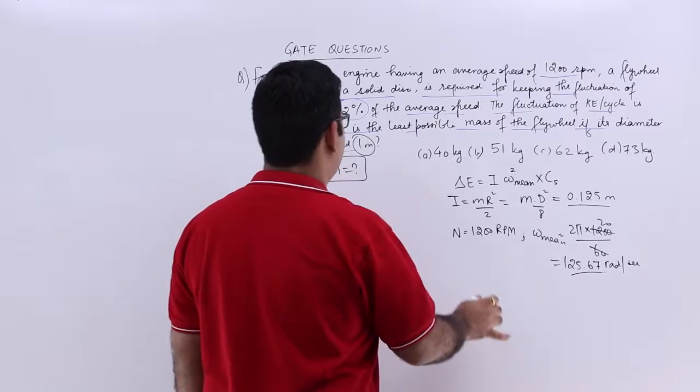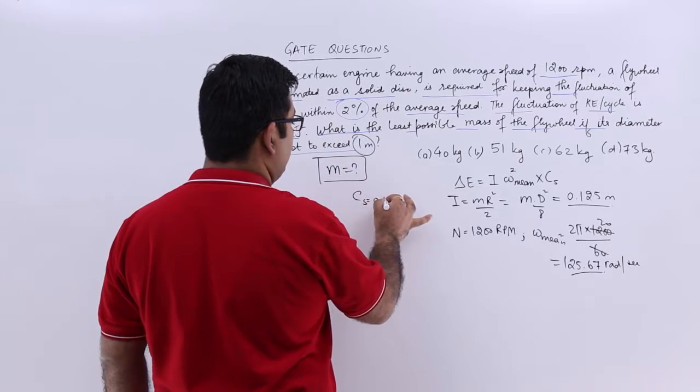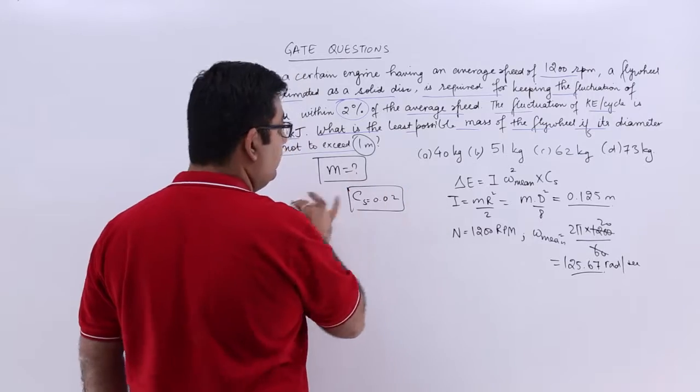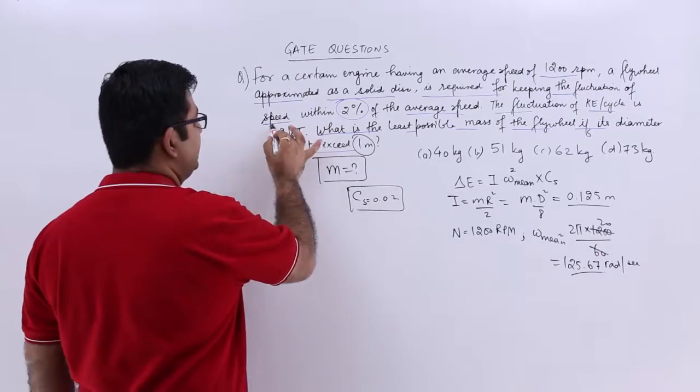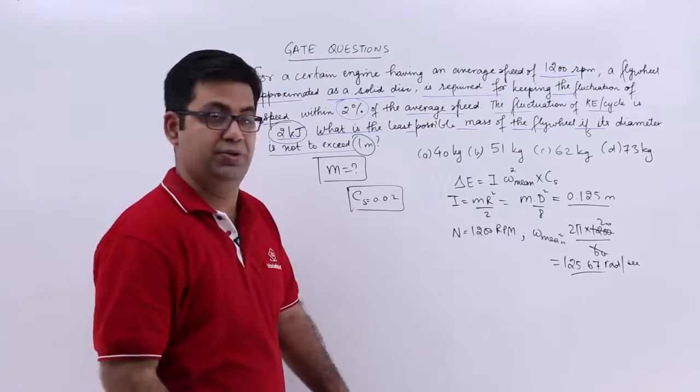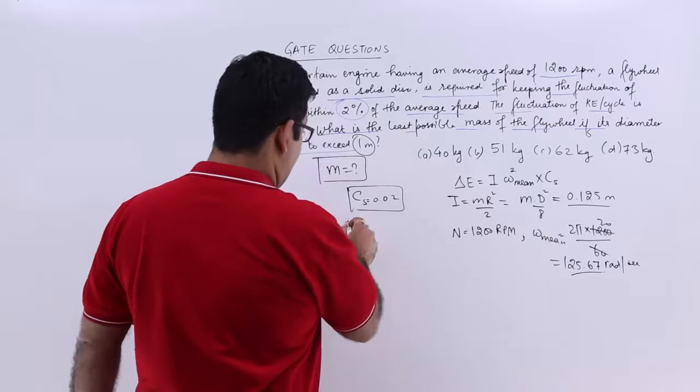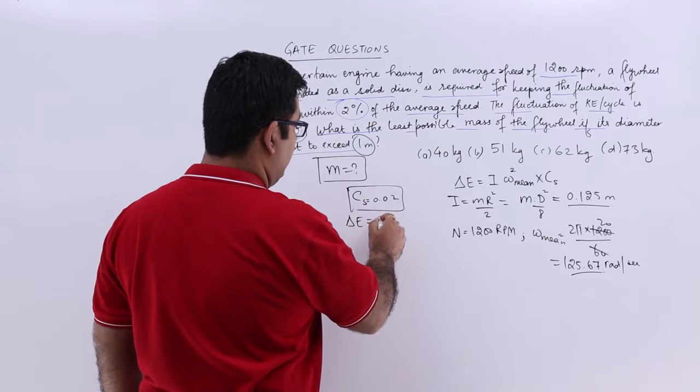Cs is 2%. So it will be 0.02. And the fluctuation is given to us as 2 kilojoules. So delta E would be 2000 joules.